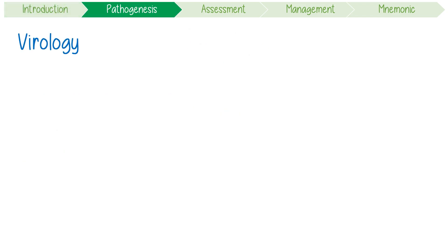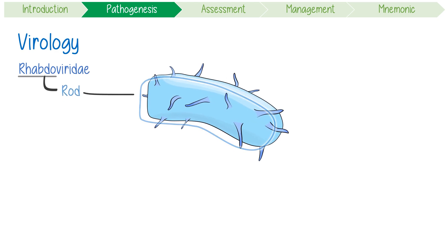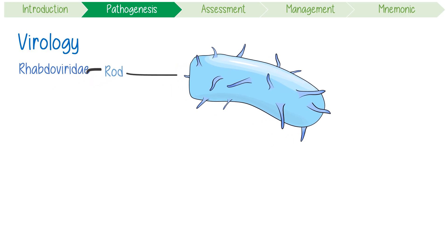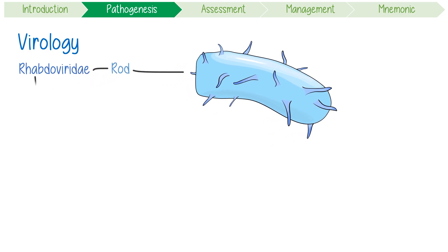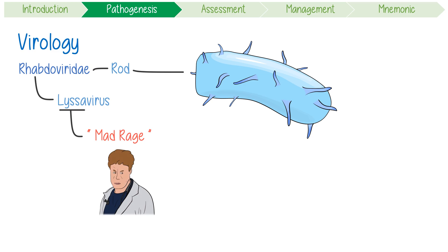Rabies is part of the Rhabdoviridae family. Rhabdo means rod, referring to the bullet shape of the pathogen. Within this family, it's part of the genus Lyssavirus. Lyssa in Greek mythology was the personification of mad rage — quite telling of the disease's clinical features.